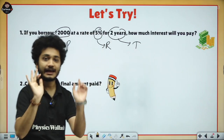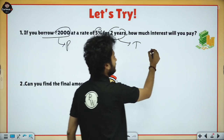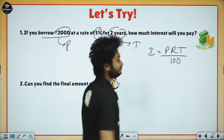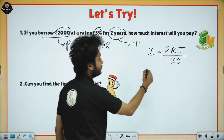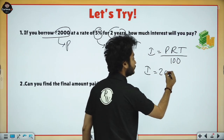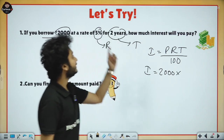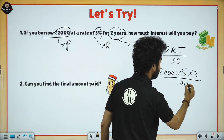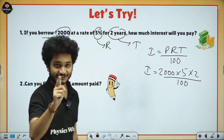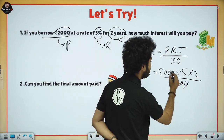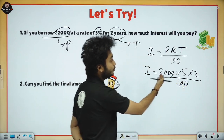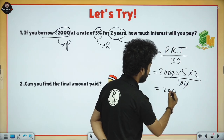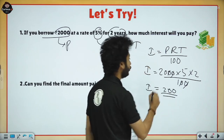I know the formula: Interest = P × R × T ÷ 100. So interest = 2000 × 5 × 2 ÷ 100. The two zeros cancel, and then 2 × 5 = 10, × 2 = 20, so with one zero remaining, the interest is 200.